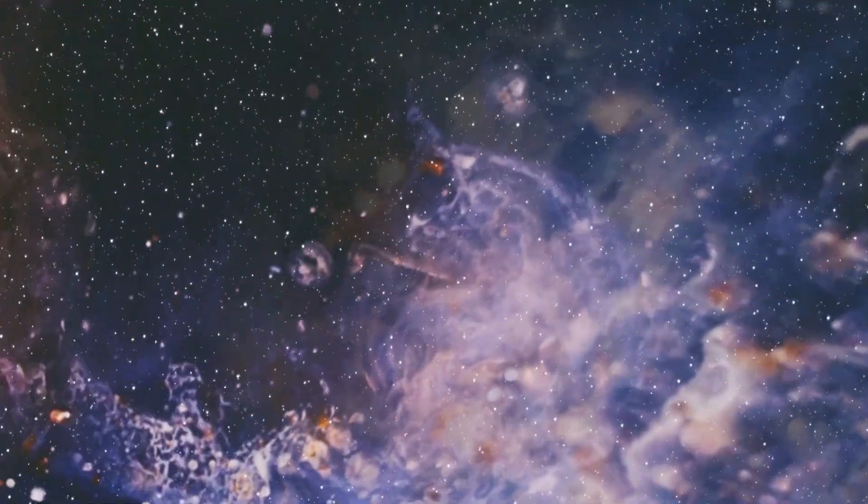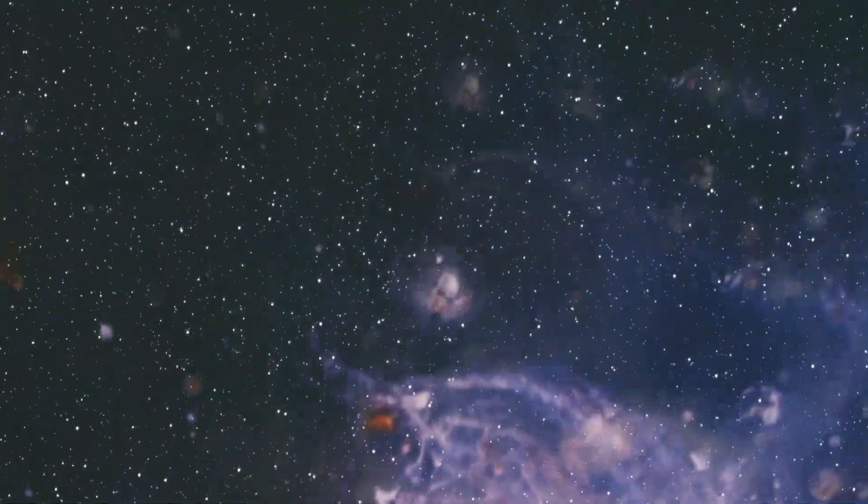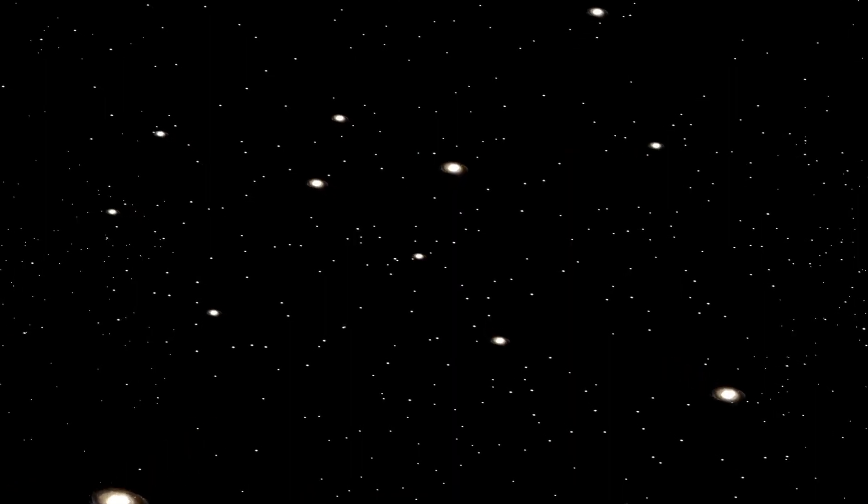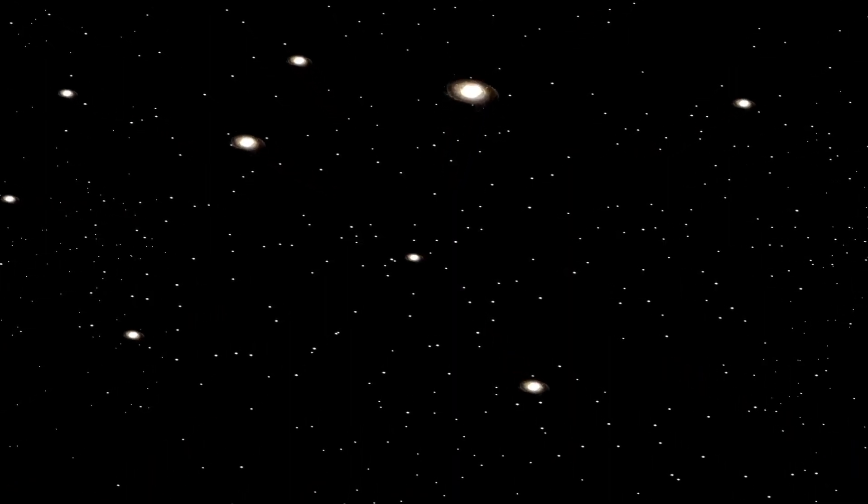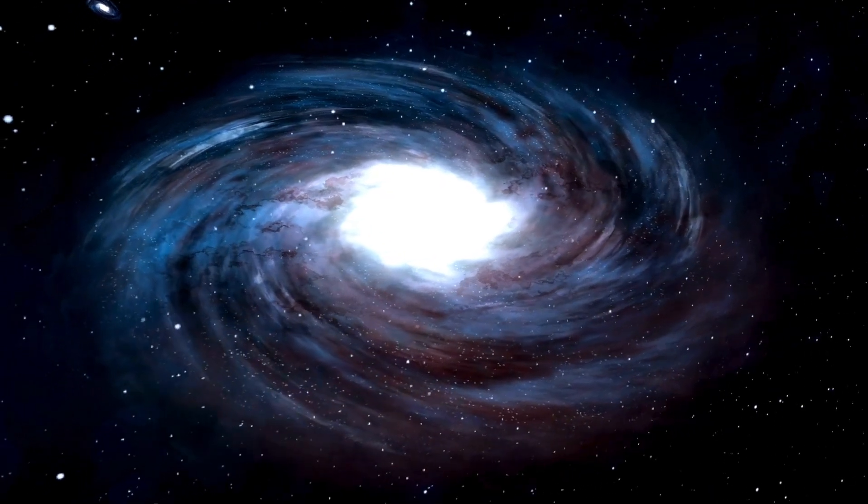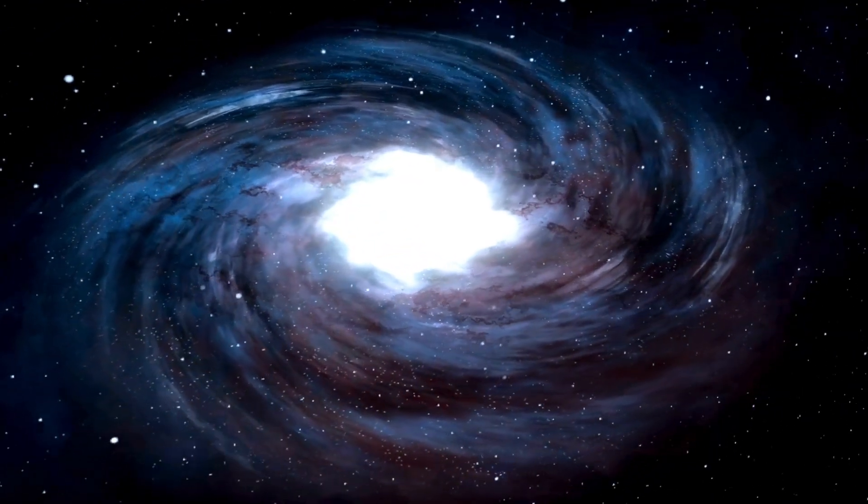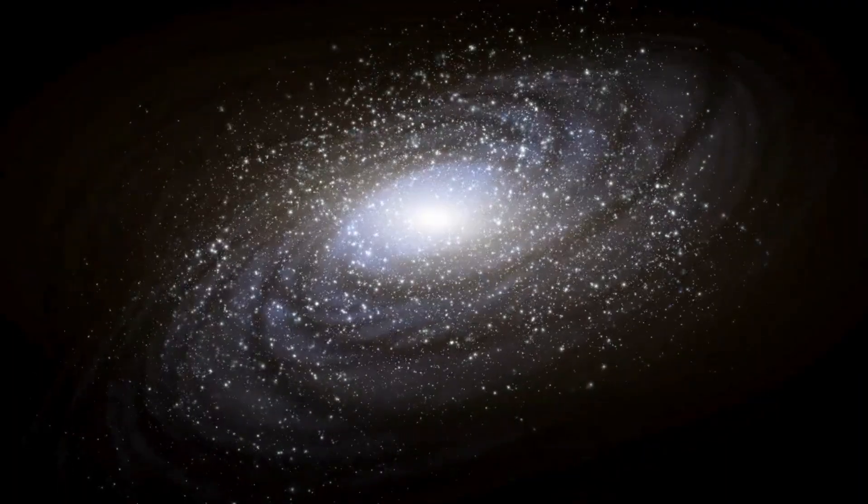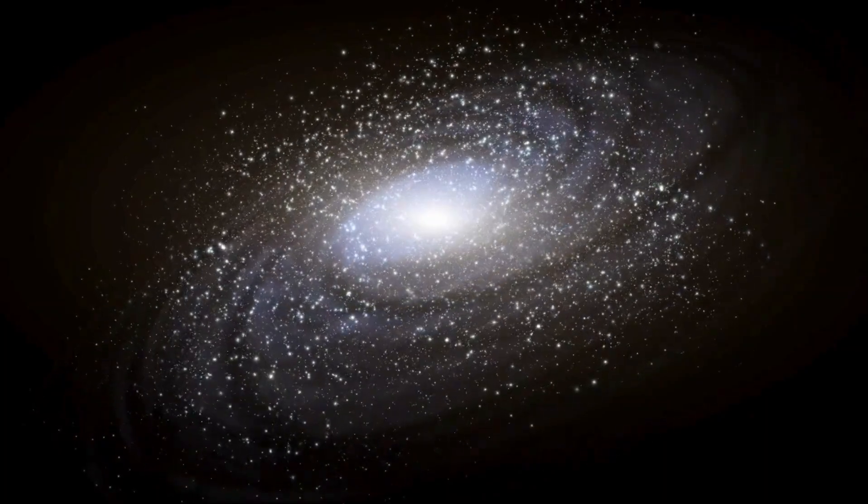One of the defining features of a black hole is its event horizon, an invisible boundary beyond which escape becomes impossible, even for light itself. This boundary marks the point at which the gravitational pull of the black hole becomes so intense that not even photons, the fastest entities in the universe, can get through it.